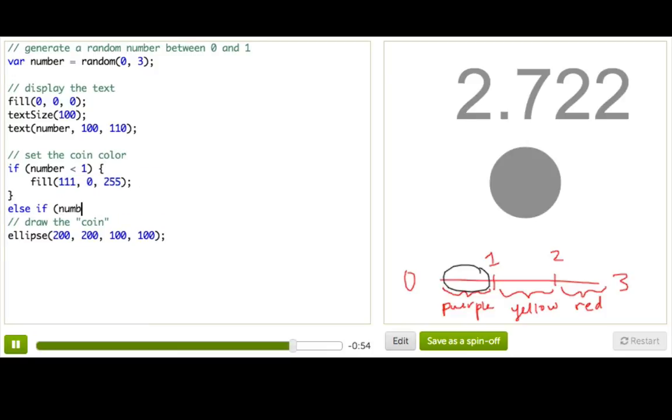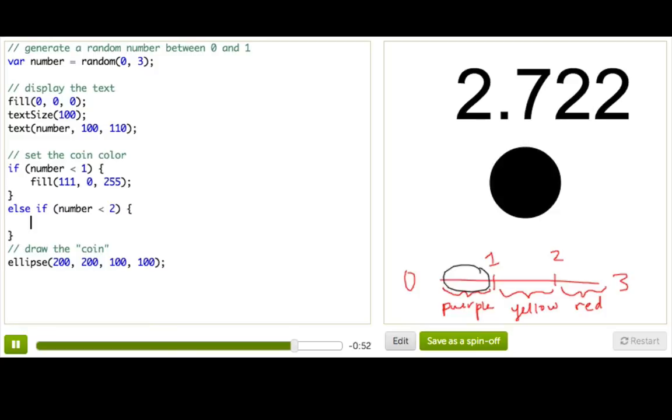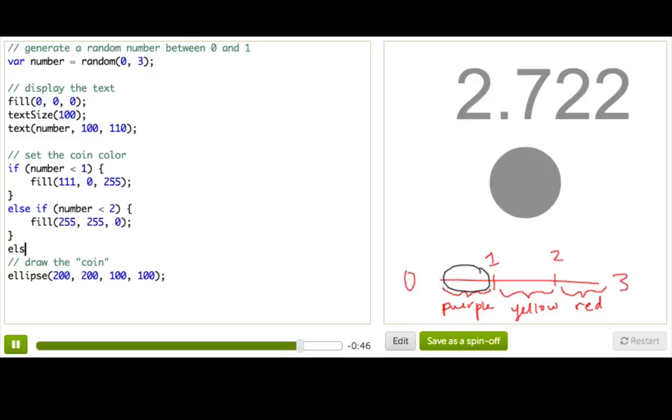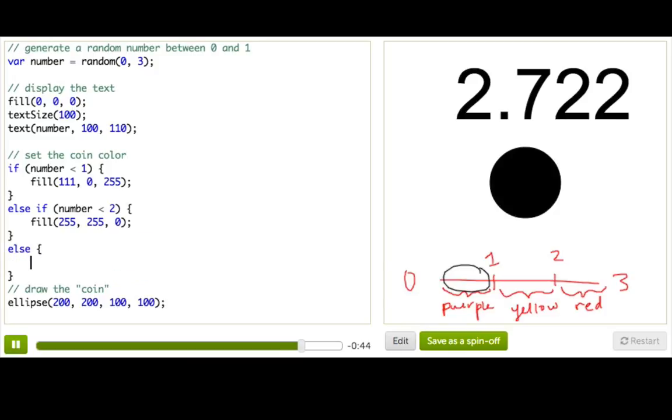Otherwise, if the number is less than 2, I can set the fill color to be yellow. And otherwise, I'll set the fill to be red.